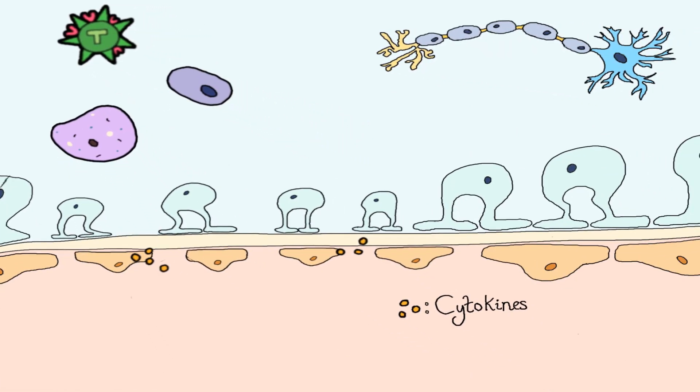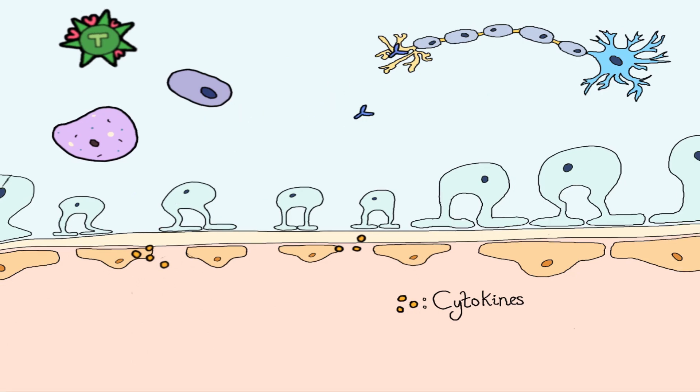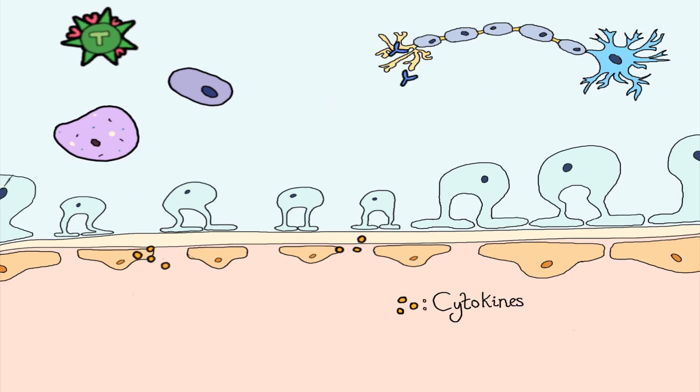These cells destroy the myelin. B-cells use antibodies to mark the myelin sheath as non-self, which means it should be destroyed. And phagocytic cells, like macrophages, engulf the cells that produce the sheath, which are called oligodendrocytes.